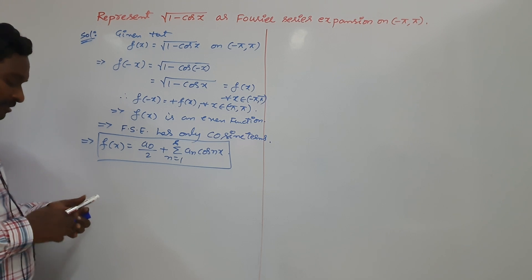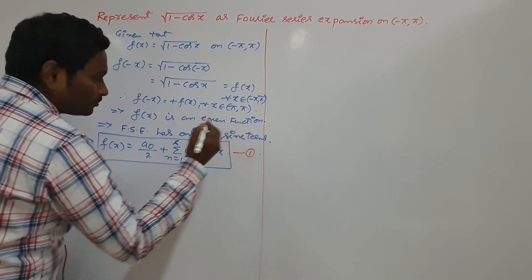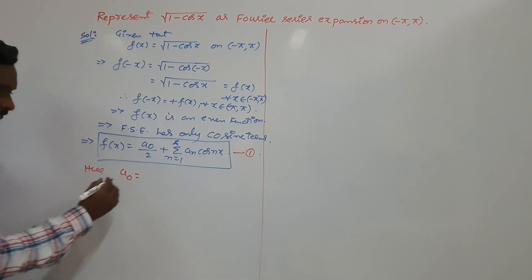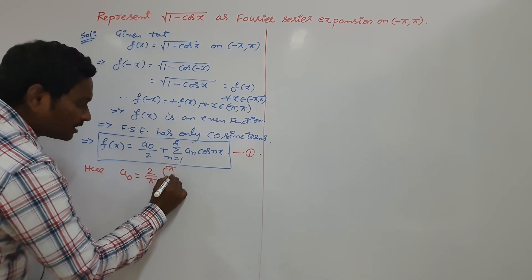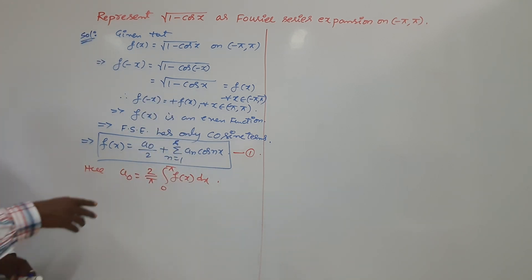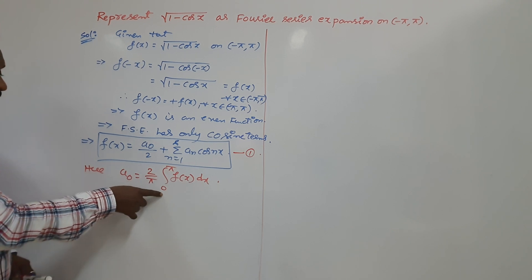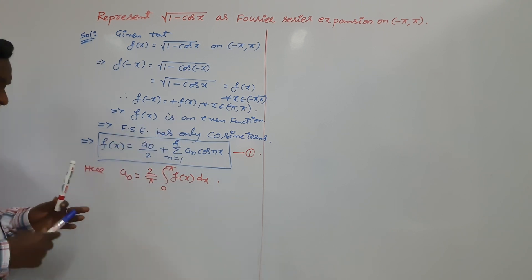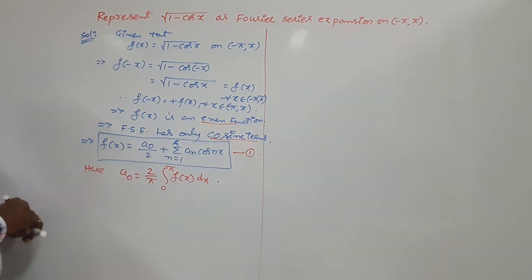So f of x becomes a naught by 2 plus summation n equals 1 to infinity of a n into cos n x. It is enough to find out the values of a naught by 2 and a n. We have a formula for getting the a naught value and the a n value. Do not write the formula 1 by pi integral minus pi to pi here, because we are using the even and odd concept.